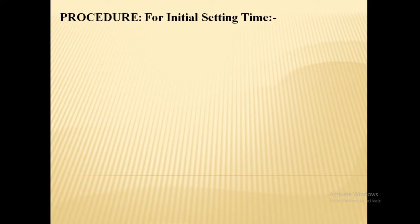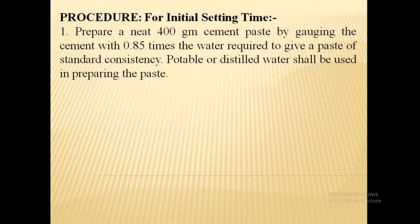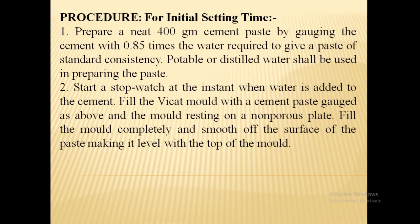Procedure for initial setting time. Prepare a neat 400g cement paste by gauging the cement with 0.85 times the water required to give a paste of standard consistency. Potable or distilled water shall be used in preparing the paste. Start a stopwatch at the instant when water is added to the cement.